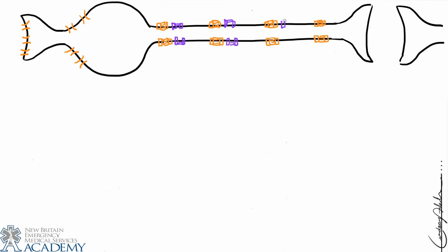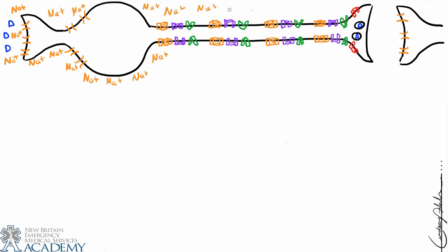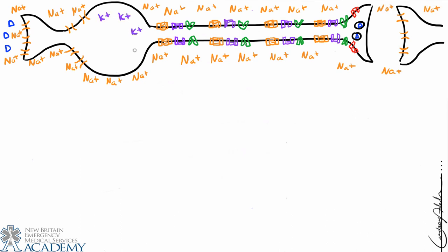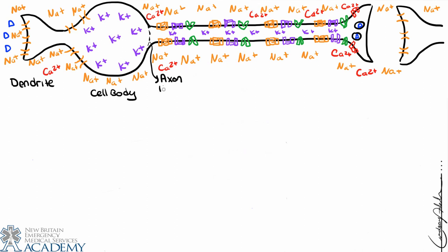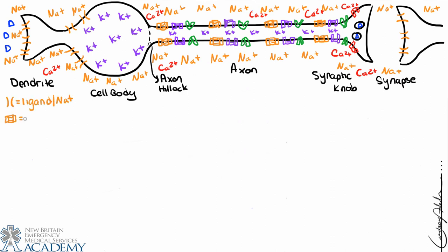We're drawing a neuron this time with all of the representative ion channels — voltage-gated and ligand-gated ion channels that we need. We're not going to draw the other organelles, but we want to point out some important structural features. We see the normal concentrations of potassium inside the cell, sodium and calcium outside the cell being high, and at the dendrite we have some ligand-gated sodium ion channels. Along the axon we have voltage-gated sodium and potassium channels, and at the synaptic knob we have voltage-gated calcium channels.